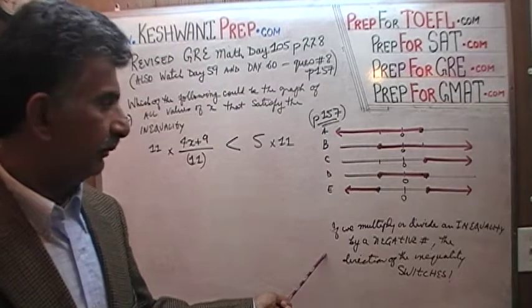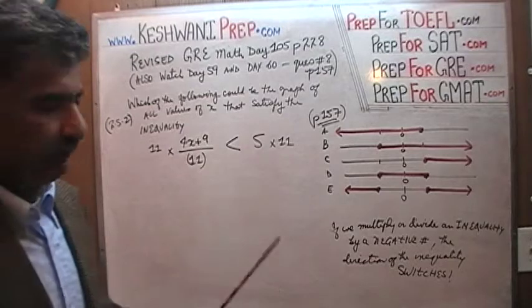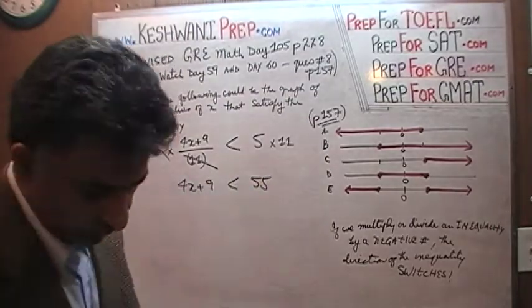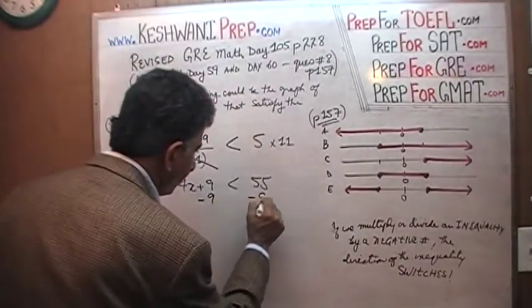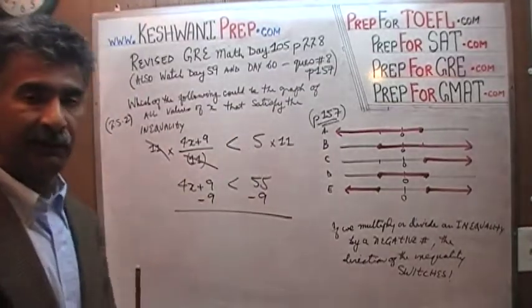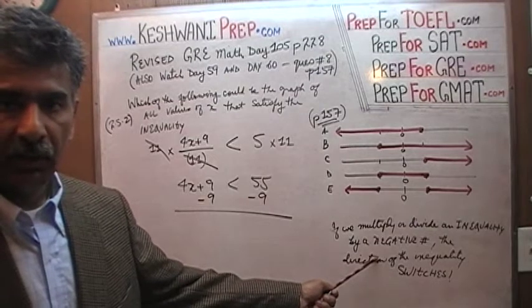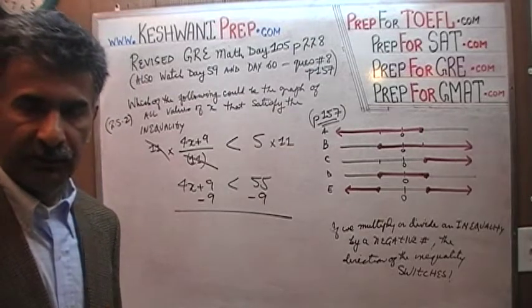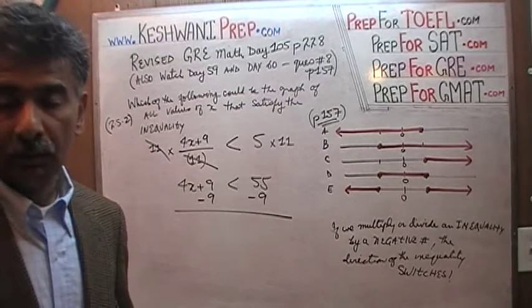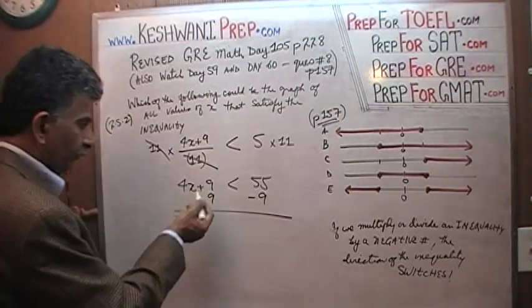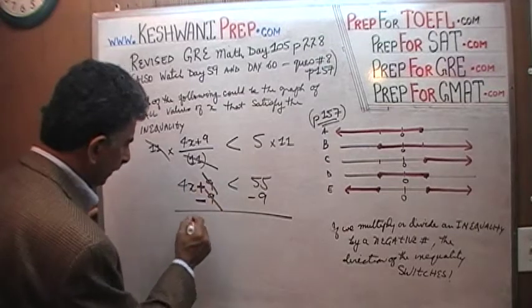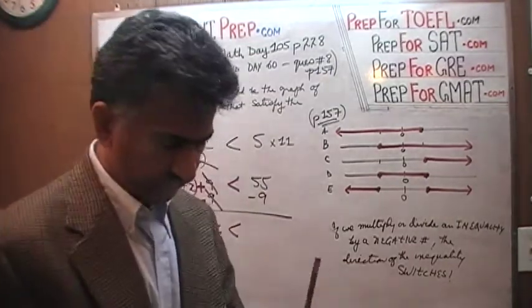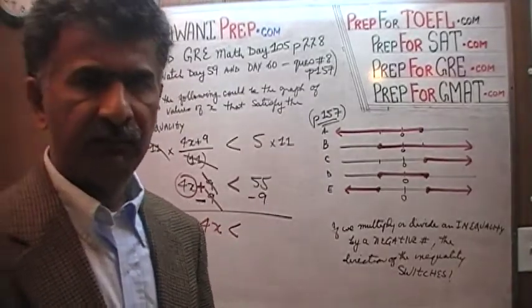This is where a lot of people make mistakes. Since we are multiplying both sides by positive 11, we don't have to worry — the 11 drops out and we get 4x plus 9 is less than 55. Now we subtract 9 from both sides of the inequality, just as you would in an equation. The principles are the same; the only exception is when multiplying or dividing by a negative number. The 9s cancel, and 4x is less than 55 minus 9, which equals 46.